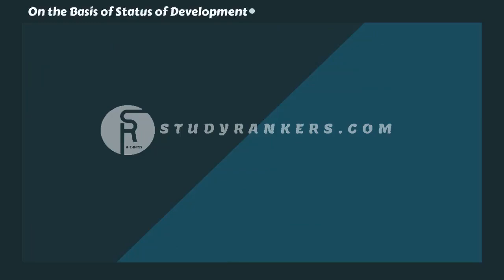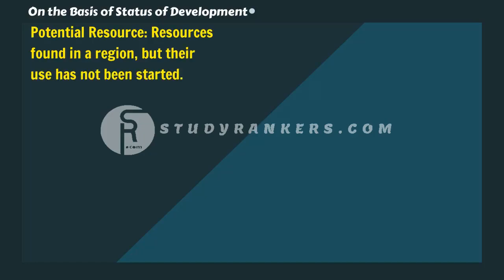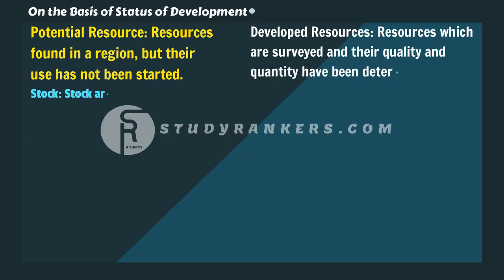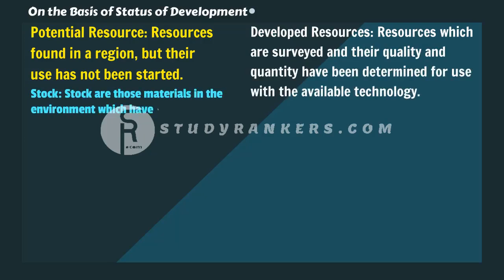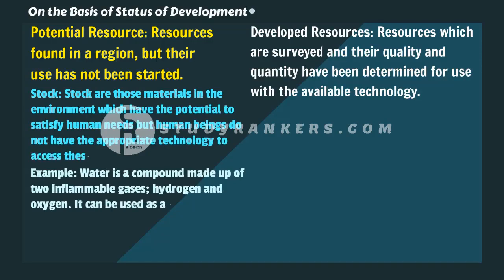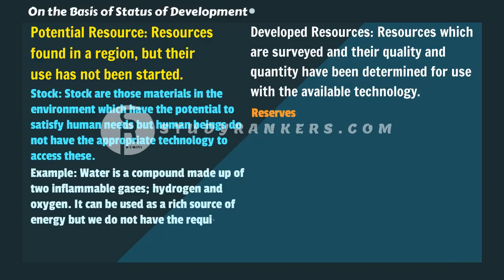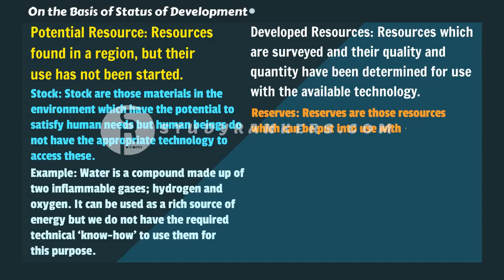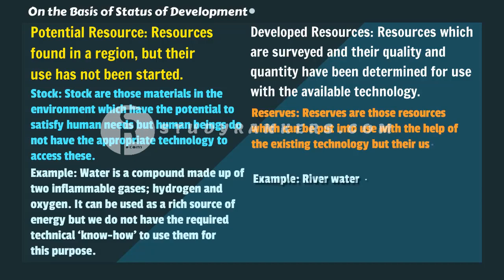On the basis of status of development, resources can be classified as potential, developed, stock and reserves. Potential resources are found in a region but have not been utilized — for example, Rajasthan and Gujarat have enormous potential for wind and solar energy. Developed resources are those surveyed and whose quality and quantity have been determined. Stock resources have been surveyed but cannot be used due to lack of technology — for example, water is a compound of hydrogen and oxygen which could be used as energy but we lack the technical know-how. Reserves have been surveyed and can be used with present technology but their use has not yet started, for example water in dams and forests.